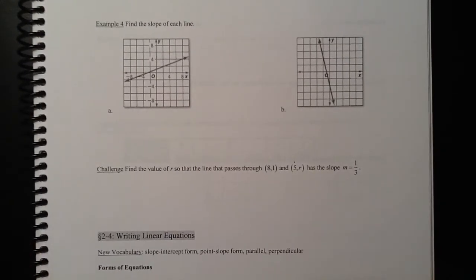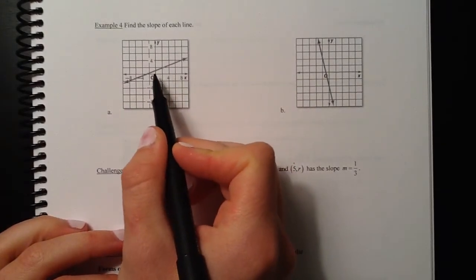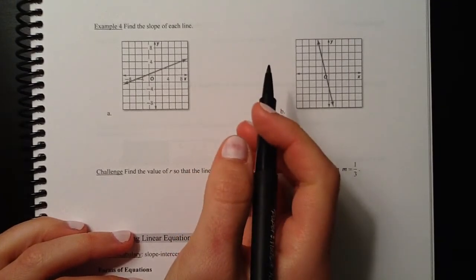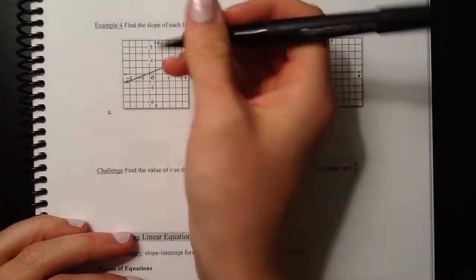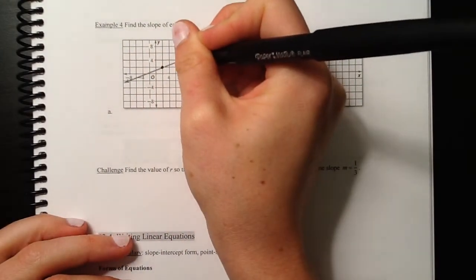Let's look at some based off of graphs with example 4. Basically we're dealing with the same thing, but instead of having two ordered pairs, we just have a graph in front of us. We have to figure out where the ordered pairs are. You want to look for a place where it crosses right through the corners. This one looks like it crosses through a corner right there and right there.